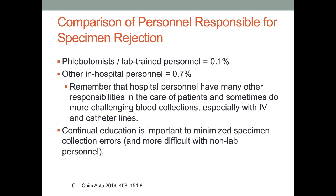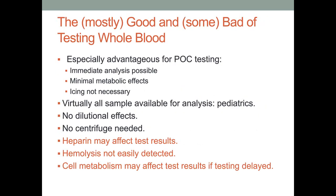For blood gas analyzers and point-of-care testing, we use whole blood. This is especially advantageous: immediate analysis is possible without centrifugation, there are minimal metabolic effects if the sample is analyzed quickly, icing is not necessary, and for pediatric applications you can analyze virtually all of the available sample. There are no dilutional effects as seen with some electrolytes measured on large chemistry analyzers. Some disadvantages include that heparin may affect test results, hemolysis is not easily detected in whole blood, and cell metabolism may affect test results if testing is delayed.